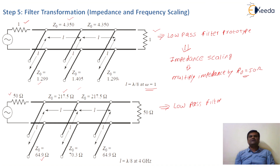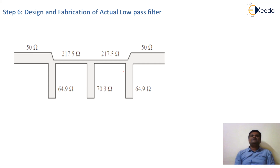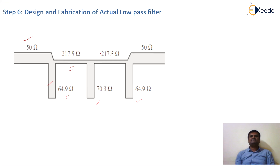This is the design and fabrication of the actual low-pass filter. The filter has a source resistance, then unit elements alternating as steps one, two, and three. This demonstrates how we design any type of filter at microwave frequency by following these steps. Thank you.